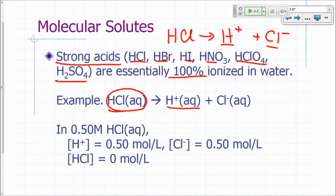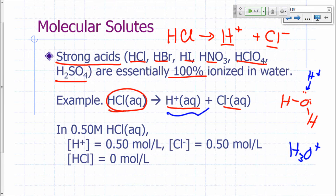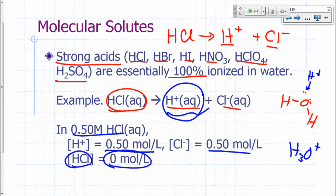All strong acids break up into H⁺ and something else. These six acids are called strong acids—they're essentially 100% ionized in water. So if you have HCl, you're not going to get any HCl molecules in water. It will split up right away into H⁺ and chloride. What actually happens is your H⁺ attaches itself to a water molecule to give what's called a hydronium ion, generally written as H⁺ aqueous.